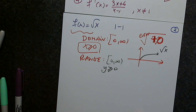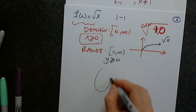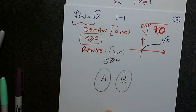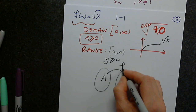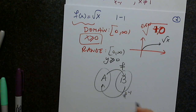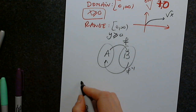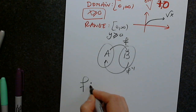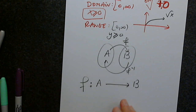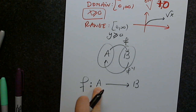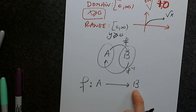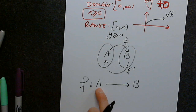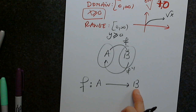I want to establish something important. If this is set A and this is set B, and this is function F, and this is function F inverse, we write mathematically F: A → B. This means F is defined on set A — so A is the domain — taking values in B, which means B is the range. For F inverse, it must go from B to A.